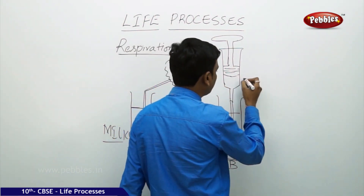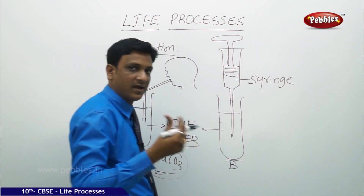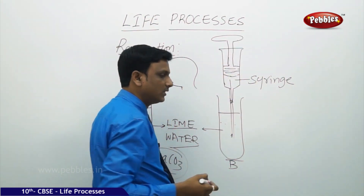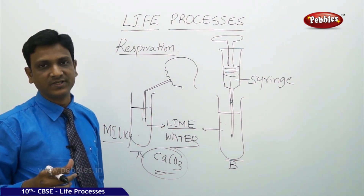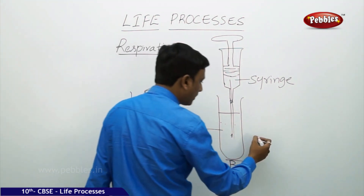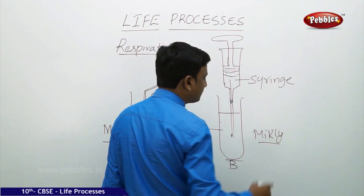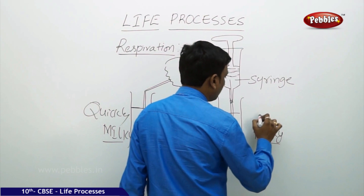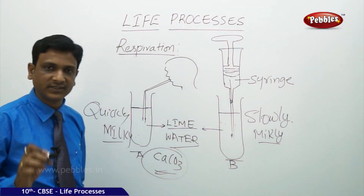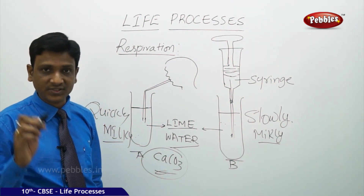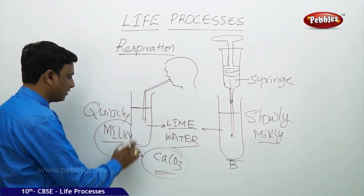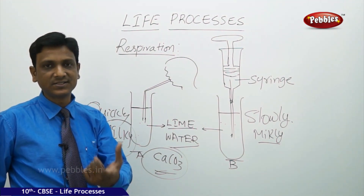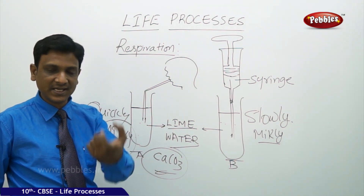In the second test tube, labeled B, instead of blowing air through a straw, use a syringe or pichkari to pump atmospheric air into the lime water. Here the water may also turn milky, but it is very slow and delayed. In tube A it happens quickly because the percentage of carbon dioxide in exhaled air is much higher than in atmospheric air. This experiment shows that exhaled air contains carbon dioxide generated by respiration.